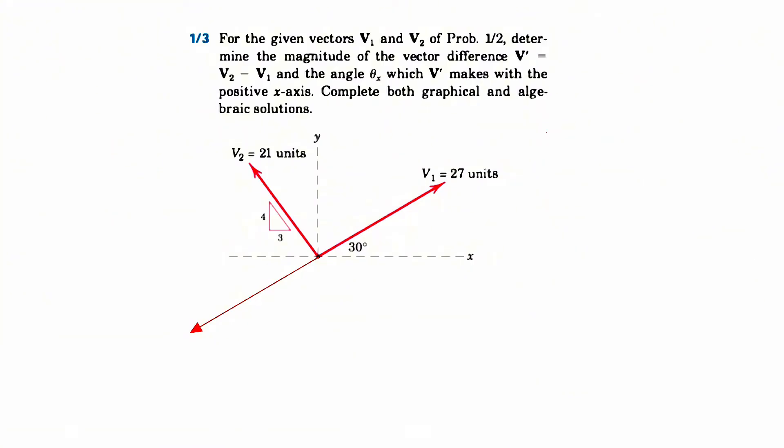And now that we have this, it's kind of like that our V prime is minus V1 plus V2. So the question is asking us to solve it graphically and using algebra. So let's go with the graphical method first.